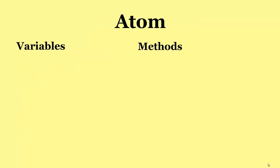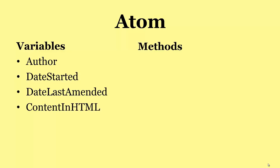So let's have a look at the atom class. Let's have a look at its variables and methods. Well, I need to know who wrote the atom. I need to know the date they started and the date they last amended it would be good. Let's have some content in HTML format. That makes outputting much easier. And we'll have a popularity rating. Let's see how popular the atom is. We can get the students to vote on how they see the atom, and then the most popular items appear at the top of the list.